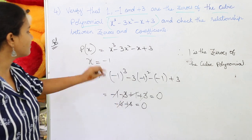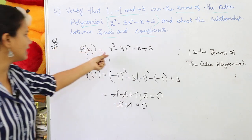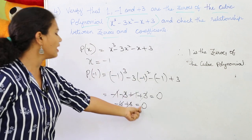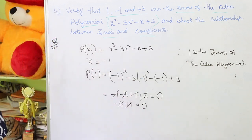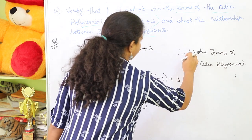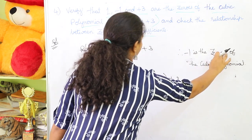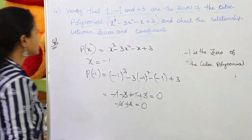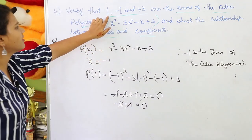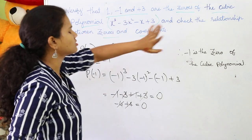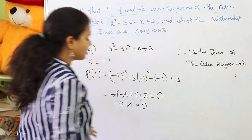If I substitute x = -1, the value becomes 0. Therefore, -1 is also a zero of the cubic polynomial. We are done with the first two: +1 is a zero of the polynomial and -1 is also a zero of the cubic polynomial. Now let's go for the last one, the third value: +3.